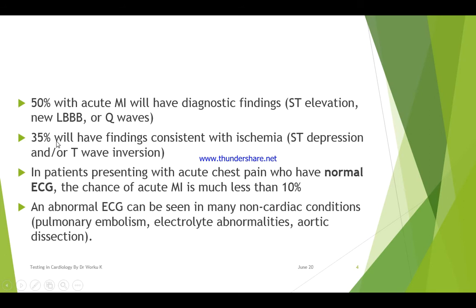About 35% will have findings consistent with ischemia, which is evidenced by ST-segment depression or T-wave inversion. In patients presenting with acute chest pain who have a normal electrocardiogram, the chance of acute myocardial infarction is much less than 10%, and in some studies, it is about less than 2%.